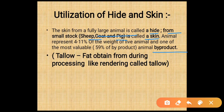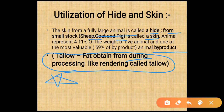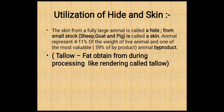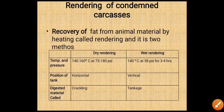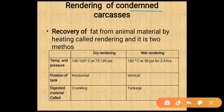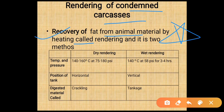Hide and skin constitute 59% of animal byproducts, making it the most valuable byproduct. Tallow is fat obtained during processing by rendering of condemned carcasses. Recovery of fat from animal material by heating is called rendering. There are two methods: dry rendering and wet rendering.